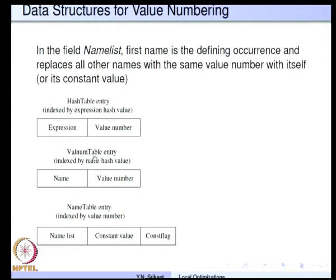The second table entry is the valnum table entry. This is the valnum table, indexed by the hash value of the name, and it stores name and then the value number. The difference between these two is that the hash table stores expressions and the valnum table stores names. We cannot use the same hashing function for both, and that is the reason why we are using two different tables and two different hashing functions.